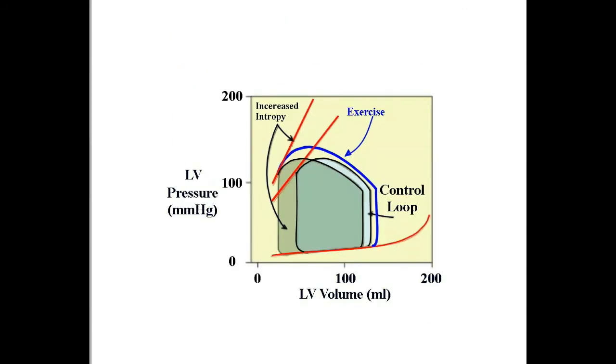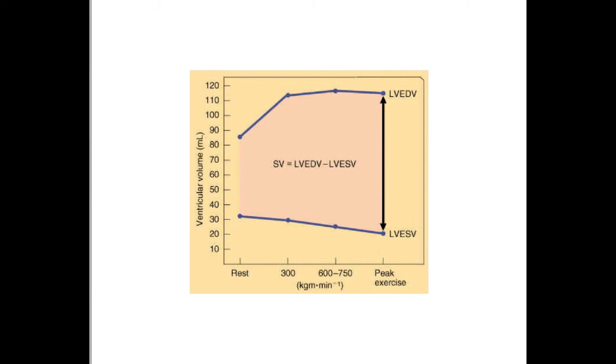However, if we increase contractility, we change the stroke volume, which is seen in this pressure volume loop. Looking at this another way, during exercise, we have an increase in left ventricular diastolic volume and we have left ventricular systolic volume decreasing.